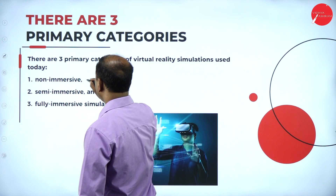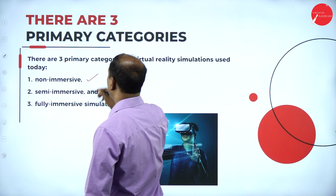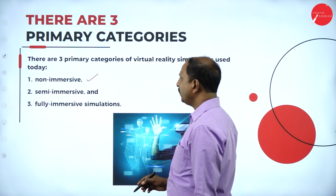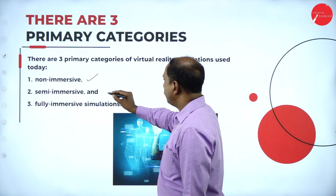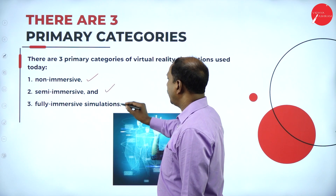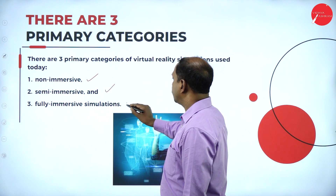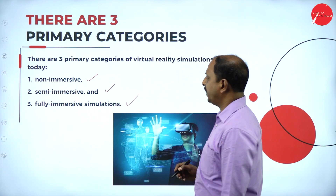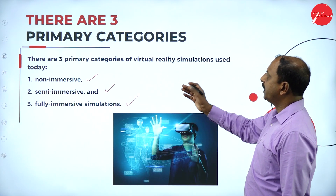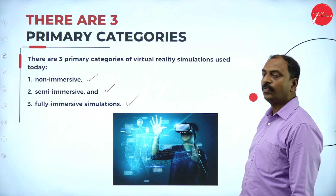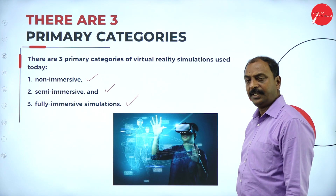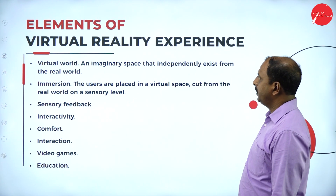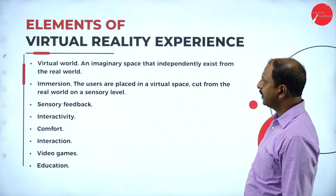There are three categories of virtual reality: non-immersive, semi-immersive, and fully immersive simulation. These are the three categories of virtual reality, which we will look at in the next slide.